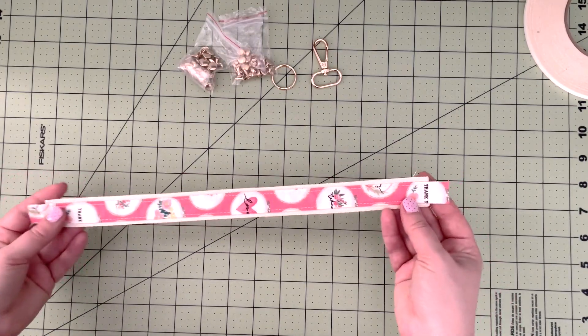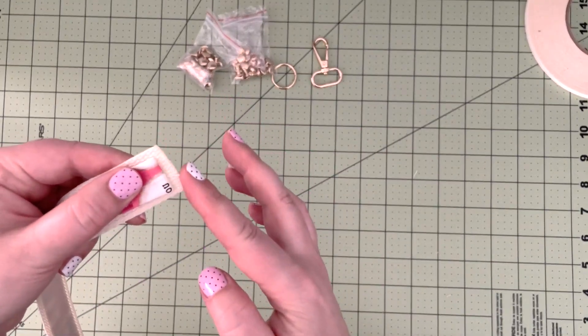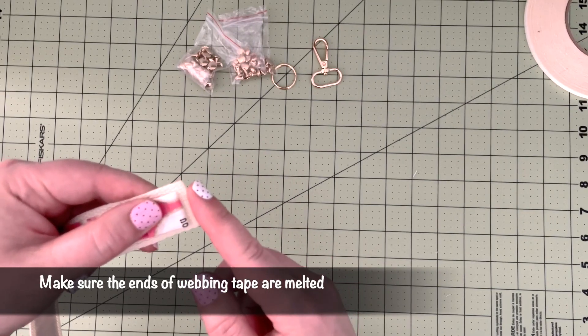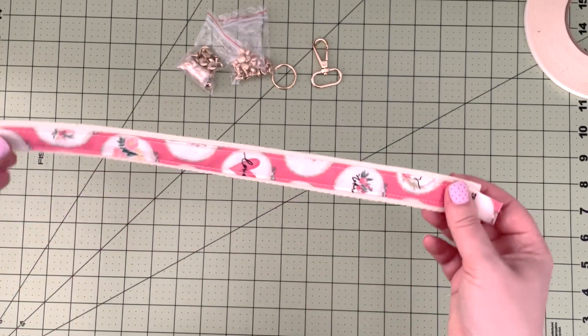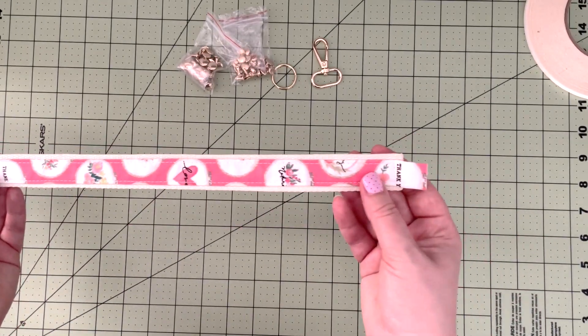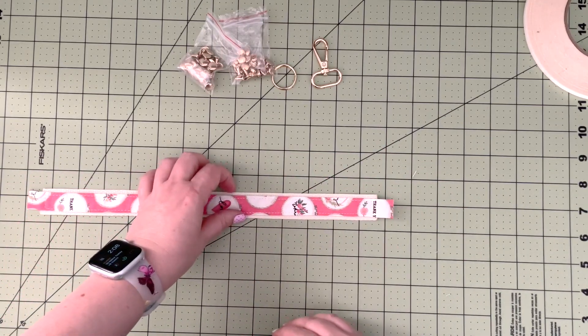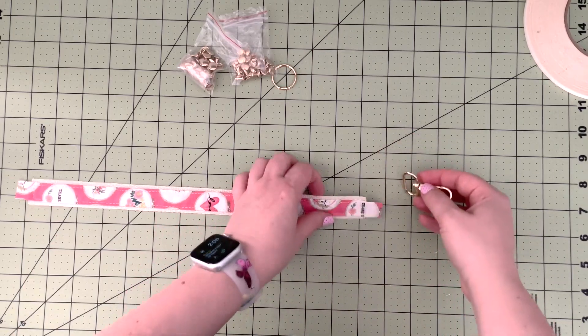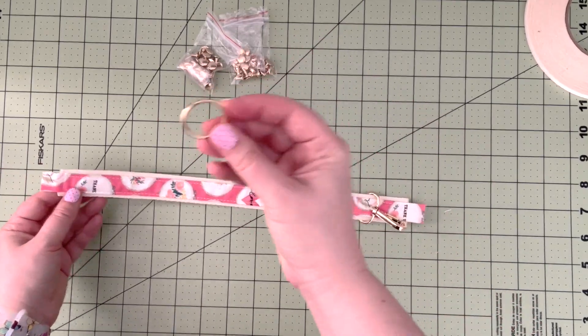Now our accent fabric is attached to our webbing tape. Just one more thing - we want to make sure that we melt the ends of the webbing tape before we start our project. That's why it's a good thing to use polyester or nylon webbing tape. Do that on both ends. Now that you have your accent fabric attached to the webbing tape, we're going to install our hardware - we're going to insert our swivel clasp and our key ring.